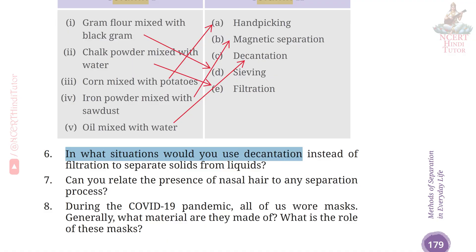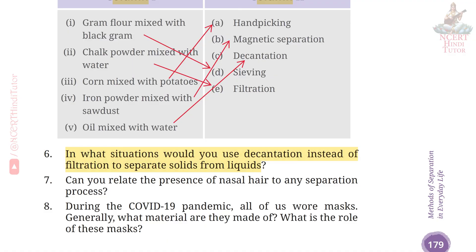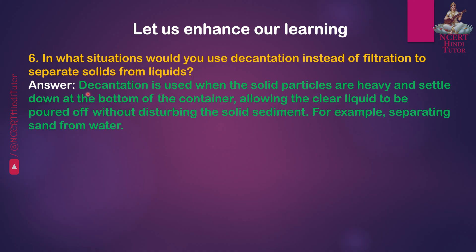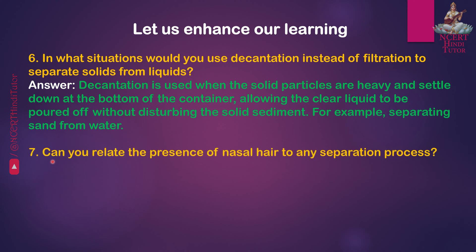Fourth — iron powder mixed with sawdust: (b) magnetic separation. Fifth — oil mixed with water: (c) decantation. Question 6: In what situations would you use decantation instead of filtration to separate solids from liquids? Answer: Decantation is used when the solid particles are heavy and settle down at the bottom of the container, allowing the clear liquid to be poured off without disturbing the solid sediment. For example, separating sand from water.